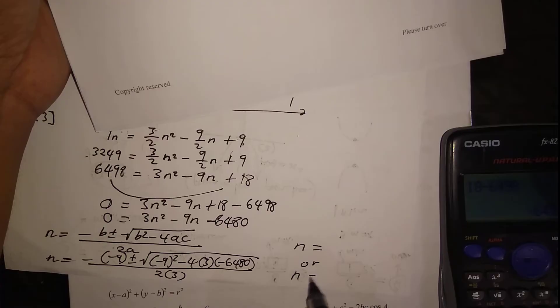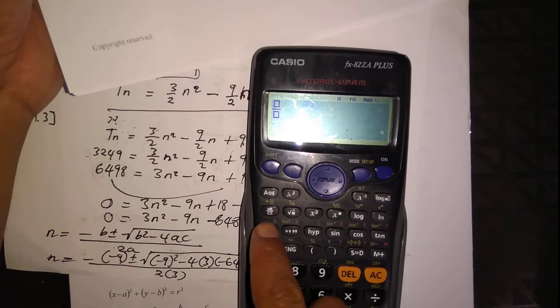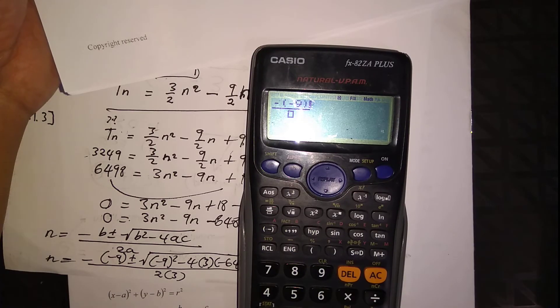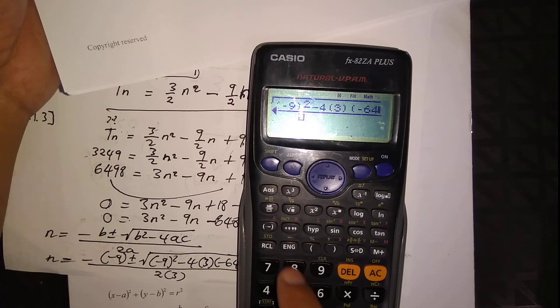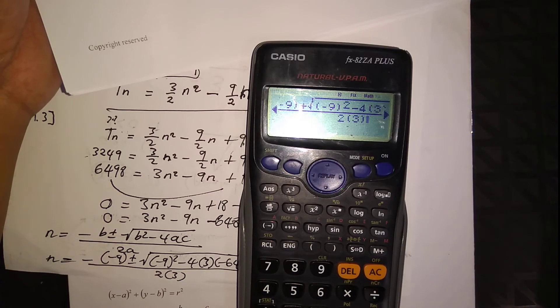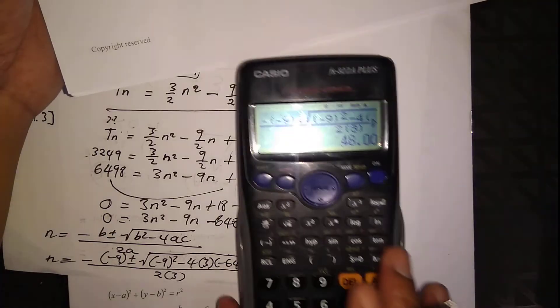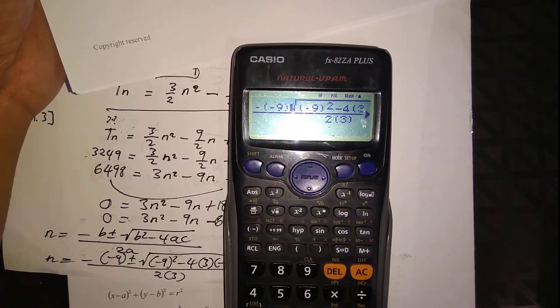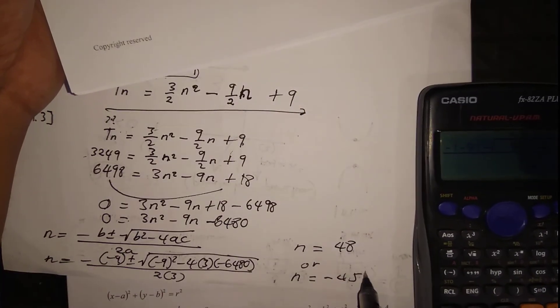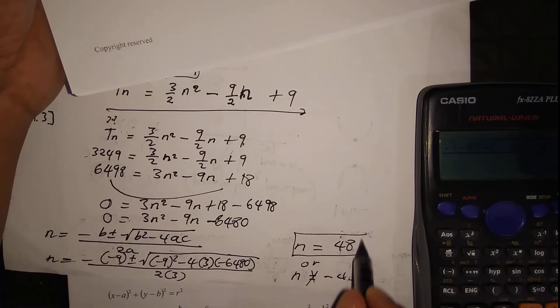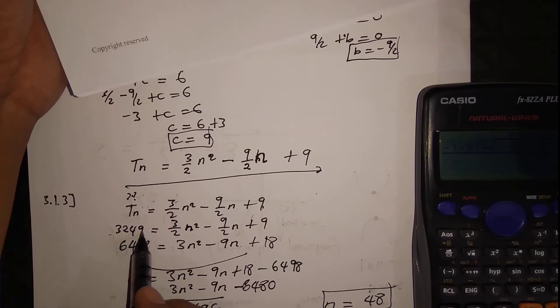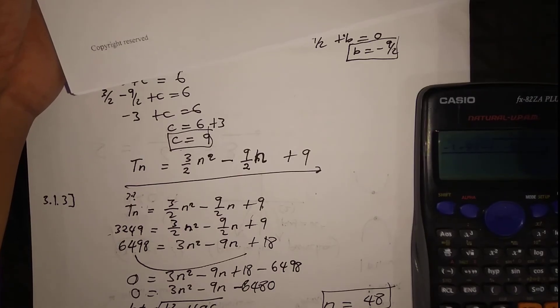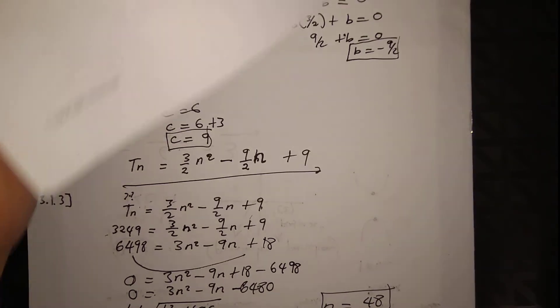So n equals negative of minus 9 plus square root of 9 squared minus 4 times 3 times negative 6480, all divided by 2 times 3. This equals 48 or a negative answer. We ignore the negative, so n equals 48. The 48th term in the sequence equals 3249.